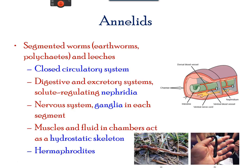Phylum Annelida are segmented worms found in aquatic and terrestrial habitats. They are segmented but have a protective cuticle on the external surface. They have a closed circulatory system with a primitive heart, a primitive kidney, and gas exchange occurs across the body surface. Earthworms and leeches are examples of annelids.